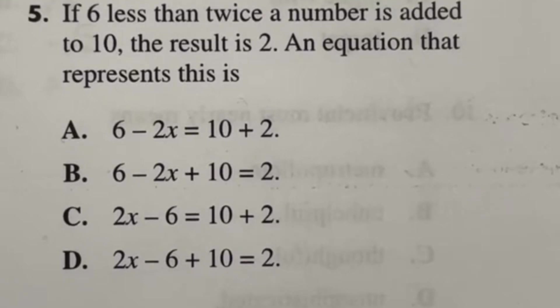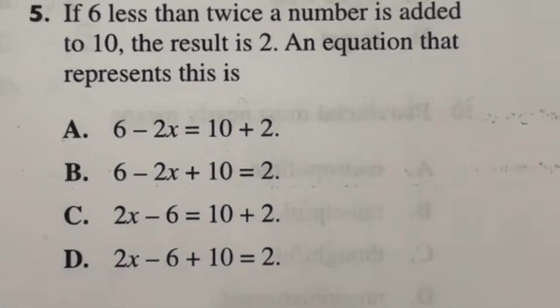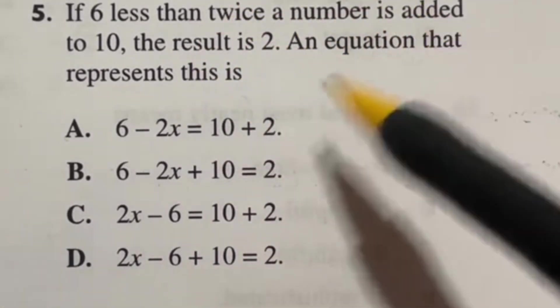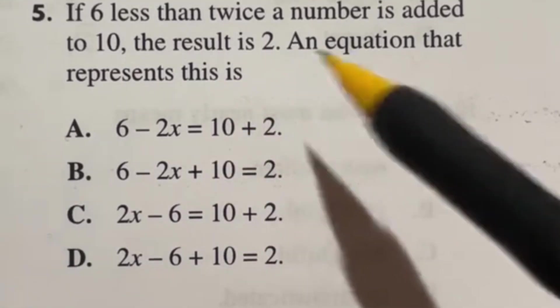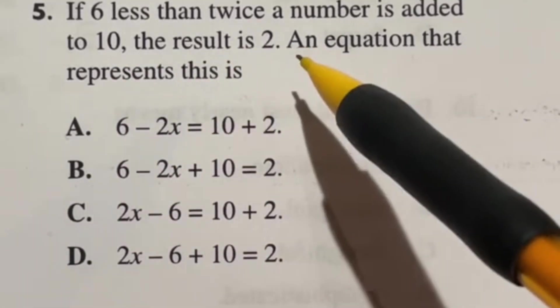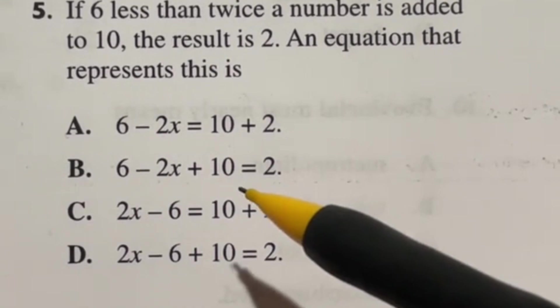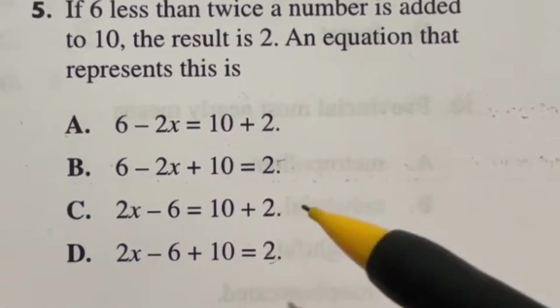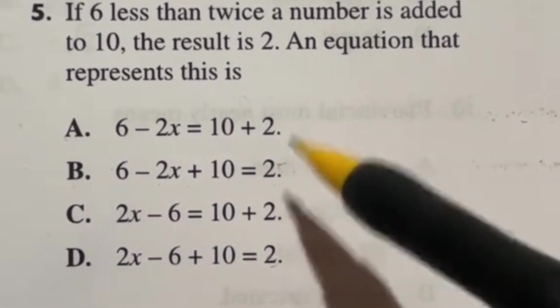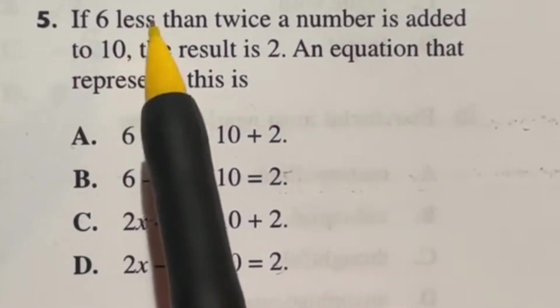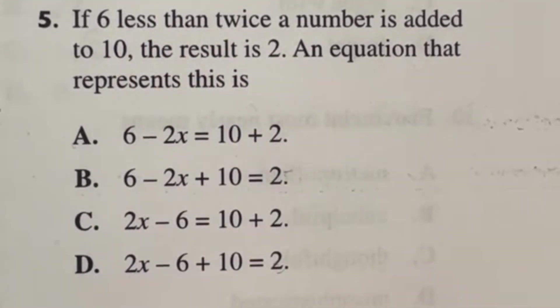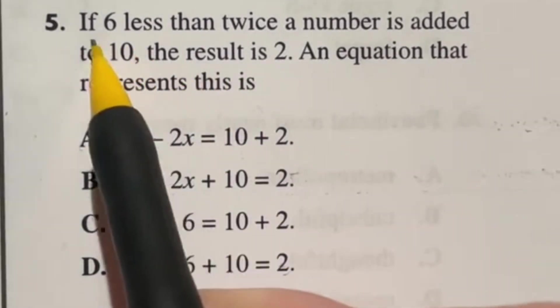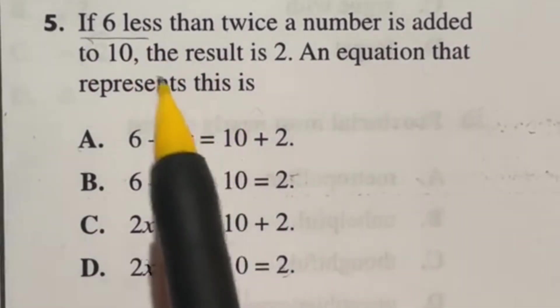For number 5, it's all about your reading skills here. So let's go ahead and read this out loud once. Let's see. It says, if 6 less than twice a number is added to 10, the result is 2. An equation that represents that is... Okay, well, it says that it is 2. So it's probably going to be one of these two, but let's go ahead and look at that again. So it says, if 6 less than... So 6 less than means that we would be subtracting 6. All right, so we got that. But what is that 6 less than?